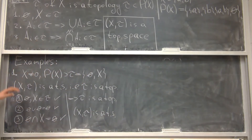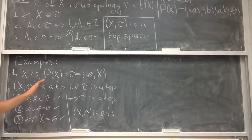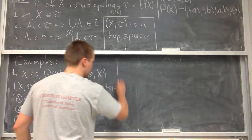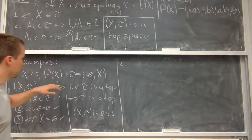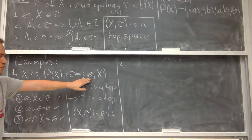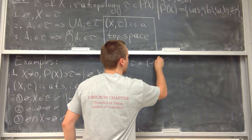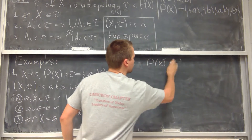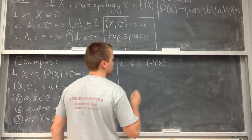So we can see that any set can be made into a topological space this way. This is the smallest possible topology — we took just two elements. But what if we take our subset τ to be the whole power set P(X)? It turns out that is also going to be a topology.